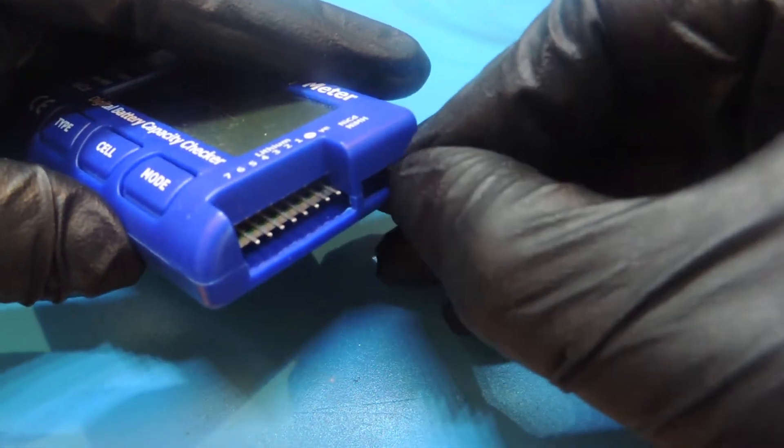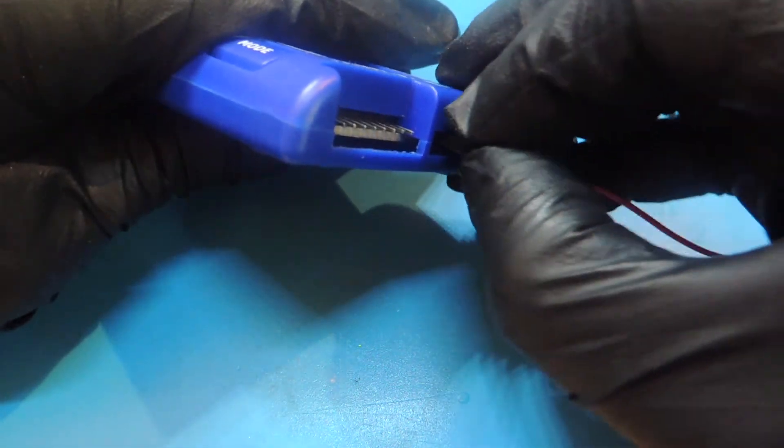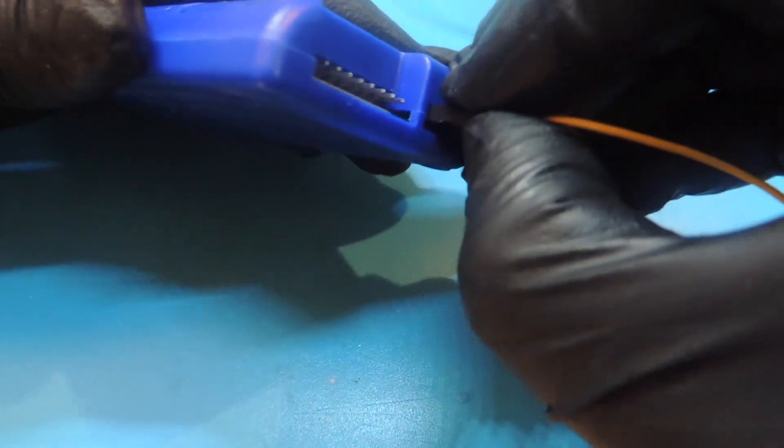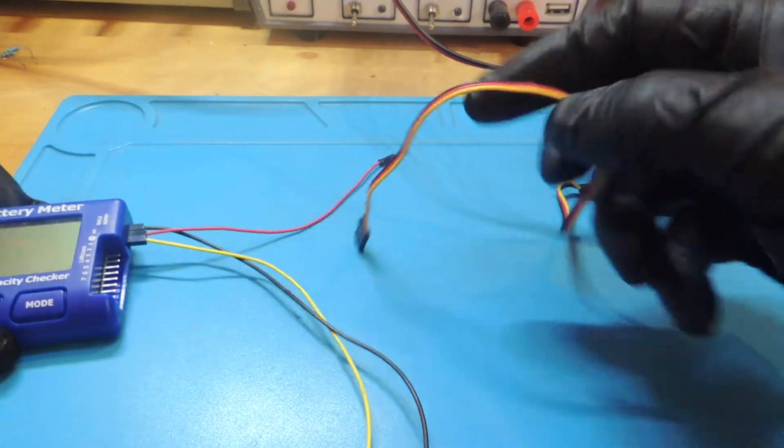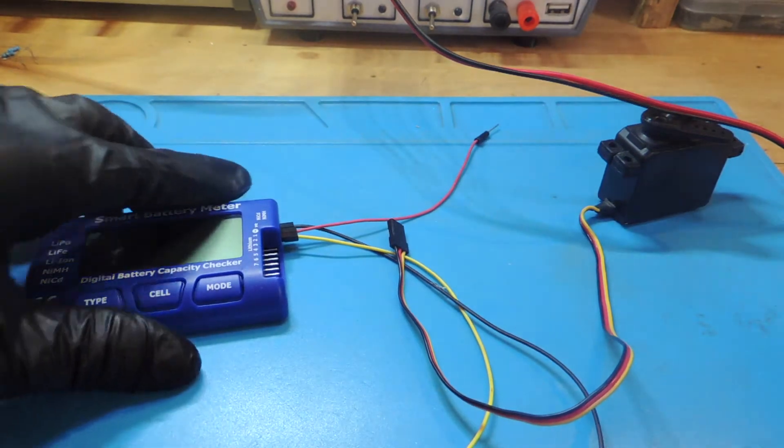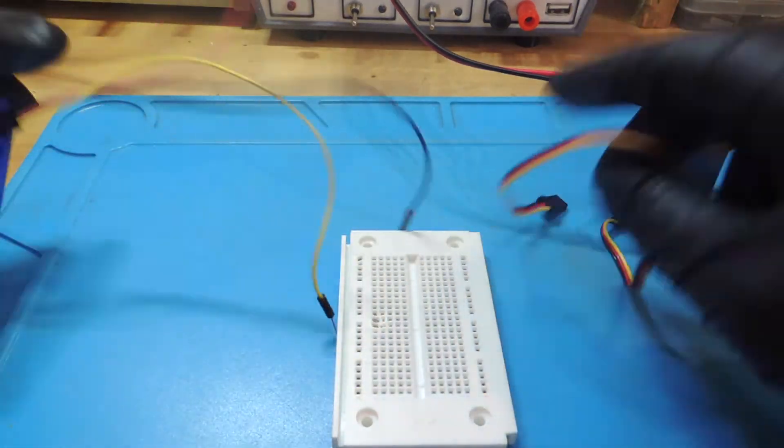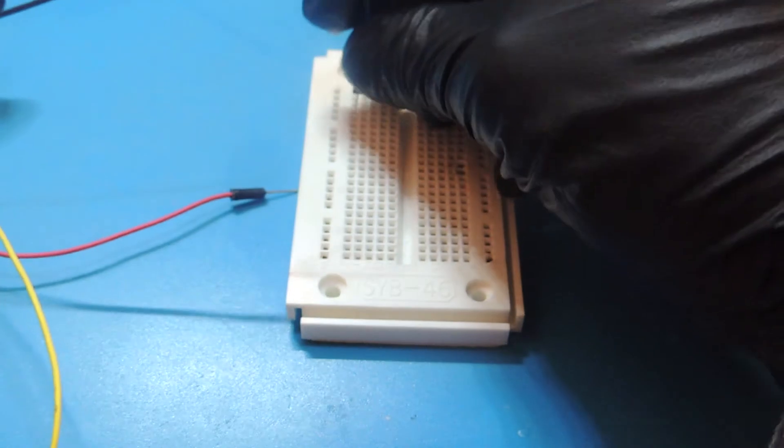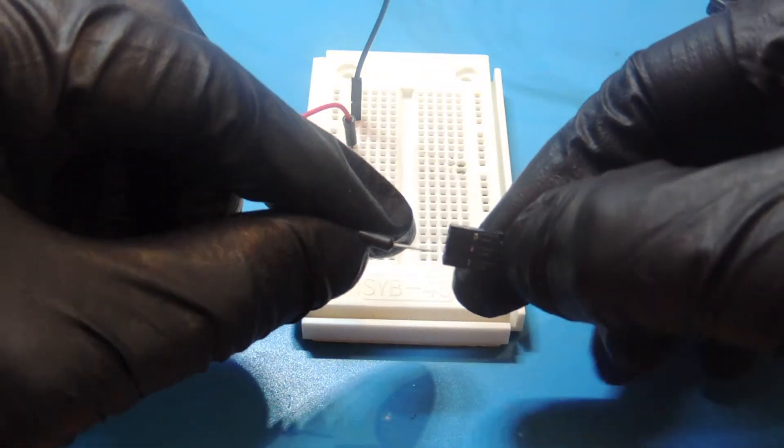The first pin is the negative pin. The second pin is the positive one and the third pin is our signal. We have to provide power to our servo and also to the battery meter. We could make a cable adapter, but let's use a breadboard. The signal pin we can connect straight to the servo cable.